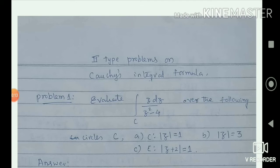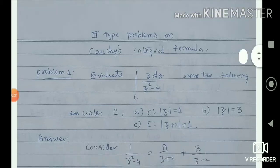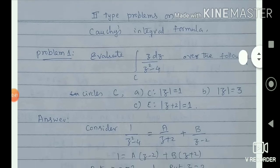Evaluate z divided by z squared minus 4 over a closed curve C, where C is taken as: mod z equal to 1 (first problem), mod z equal to 3 (second problem), and mod of z plus 2 equal to 1 (third problem). Similar to what we did in the previous type problems, we have to verify whether the points lie inside the given circles or not, in all three different cases.